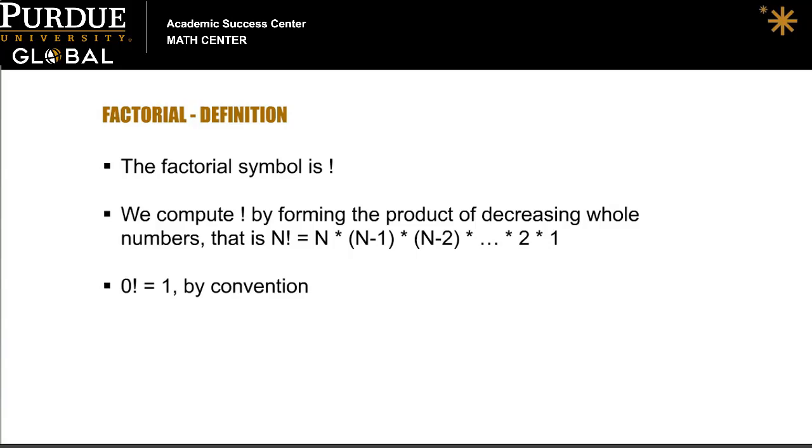We compute a factorial by forming the product of decreasing whole numbers. That is, if we take any whole number N, then to find N factorial,